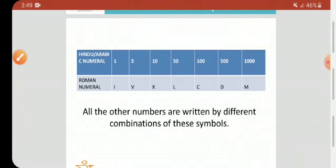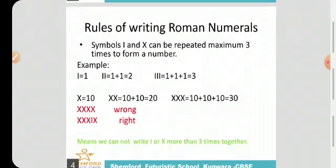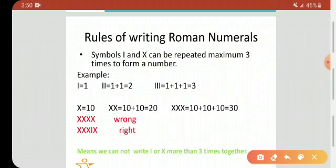All other numbers are written by different combinations of these symbols. Now, let us look at the first rule of writing Roman numerals. Symbols I and X can be repeated maximum three times to form a number. I and X cannot be repeated more than three times.